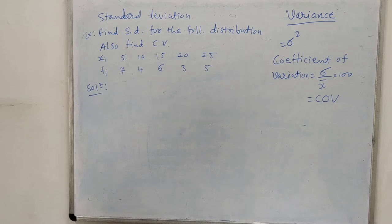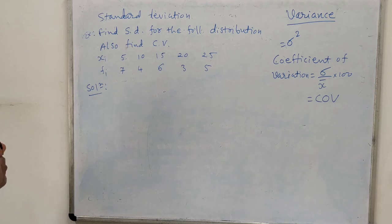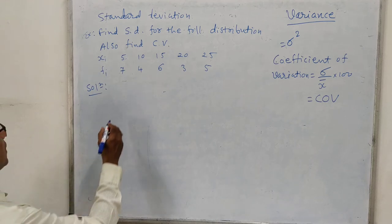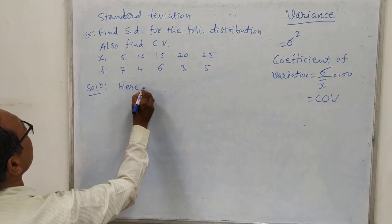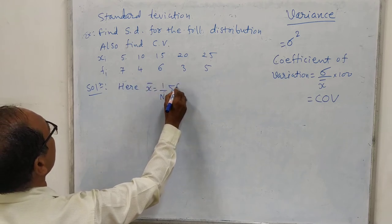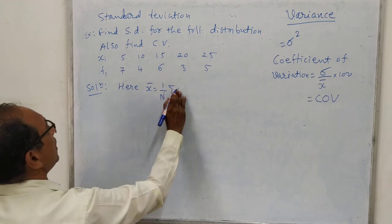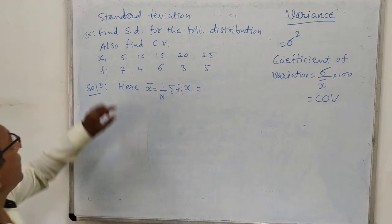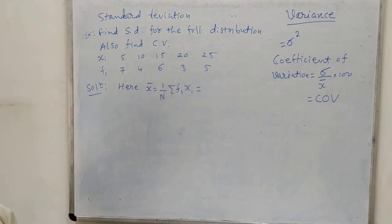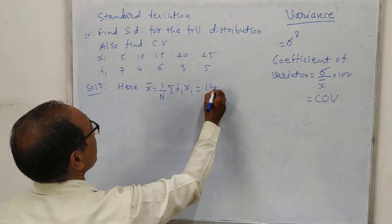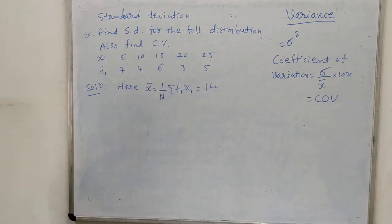First I will find x-bar. x-bar equals 1 upon capital N times sigma fi xi, which means (5×7) + (10×4) + (15×6) + (20×3) + (25×5). You can do this manually very easily. The final value gives x-bar equal to 14, and you can see this is an integer value, so there is no problem using the first or second formula.